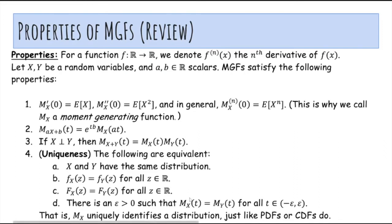The uniqueness property says that if X and Y have the same MGF for all t in this range, then X and Y also have the same distribution. So the moment generating function uniquely identifies a distribution, just like PDFs or CDFs do.